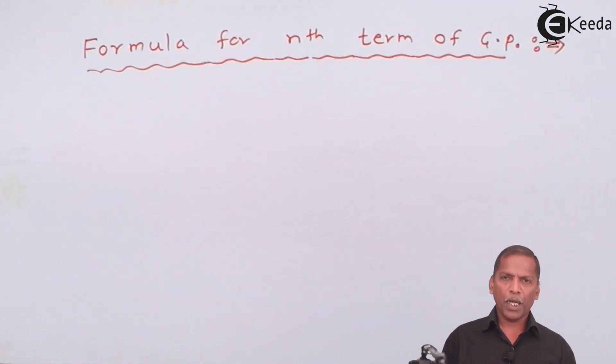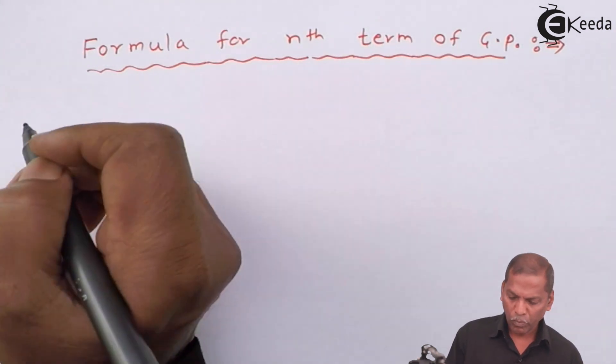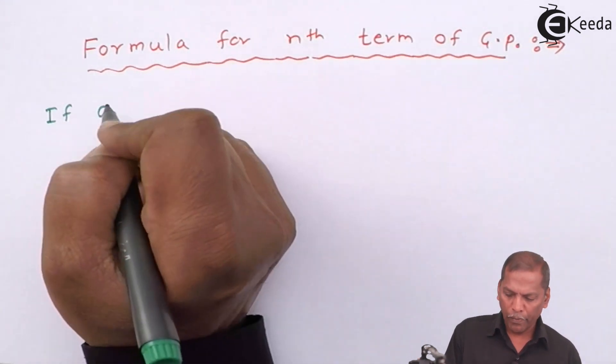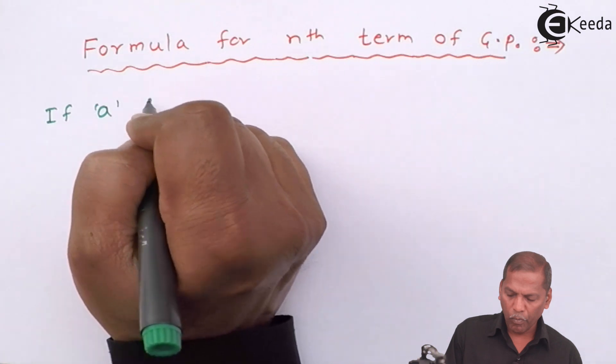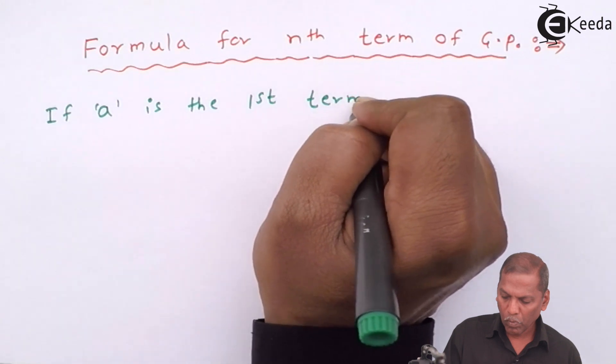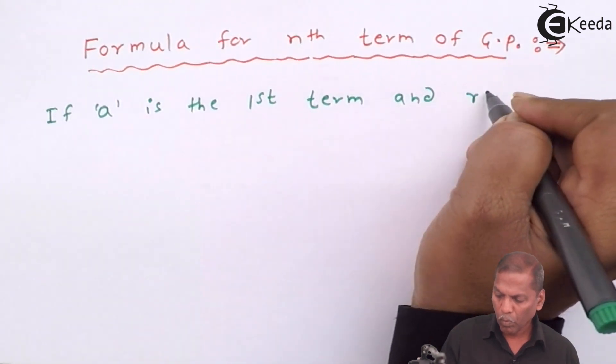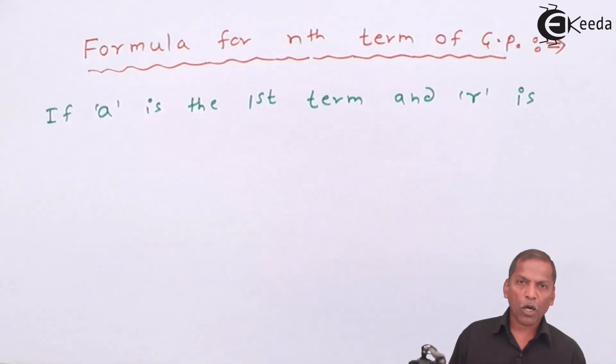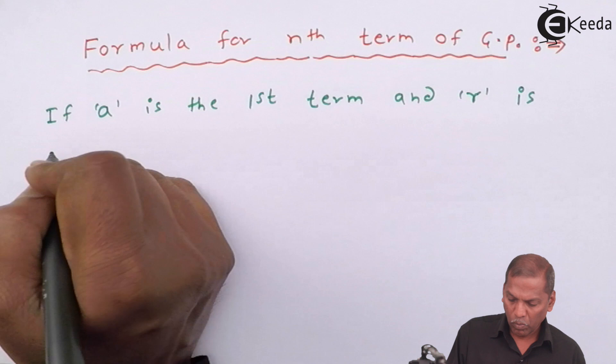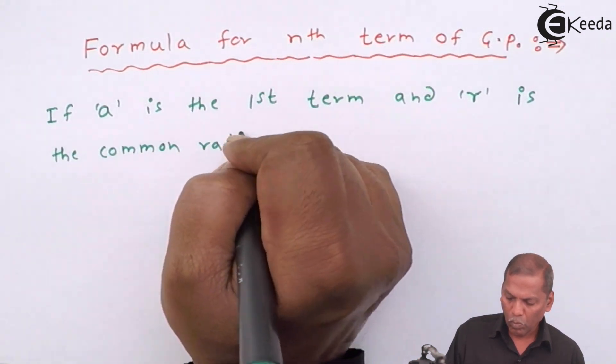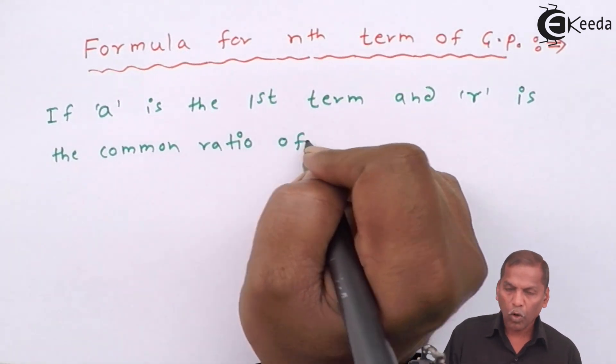Now here we see the formula for nth term of GP. If small a is the first term and small r is the common ratio of a GP,